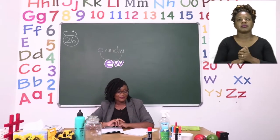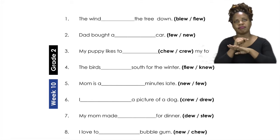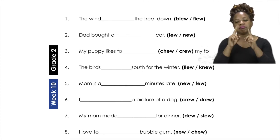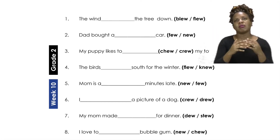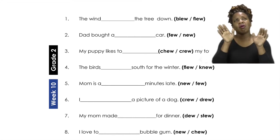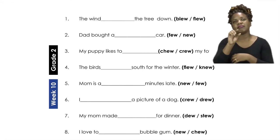Number one says: 'The wind ___ the tree down.' Do we say the word 'blue' or the word 'flew'? The wind ___ the tree down. If you said the word 'blue', well done! Please put the word 'blue'.